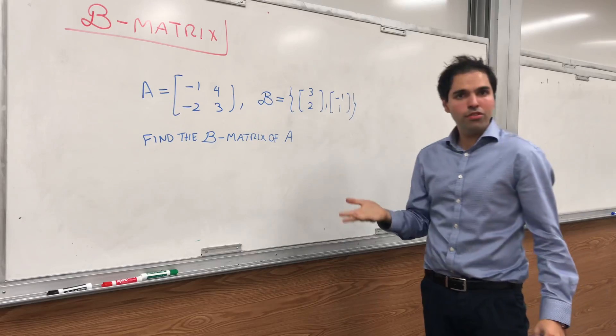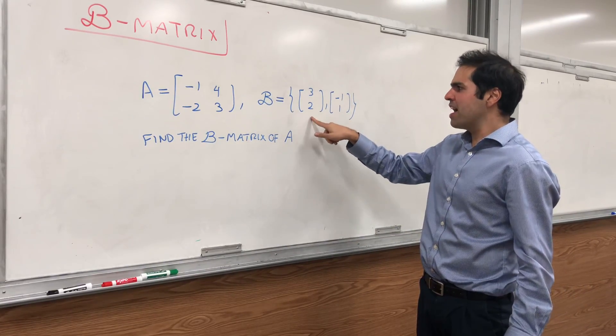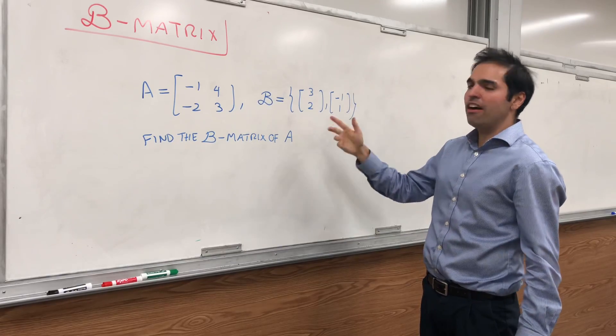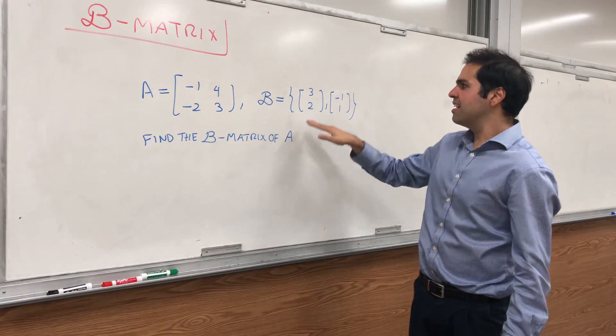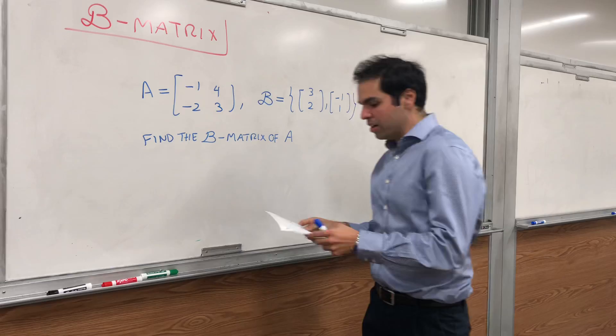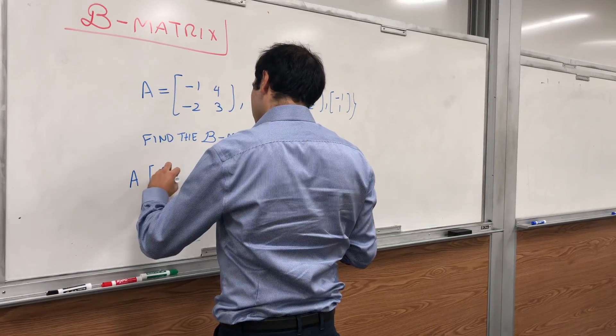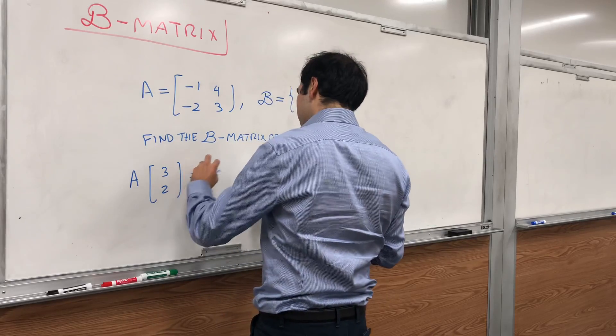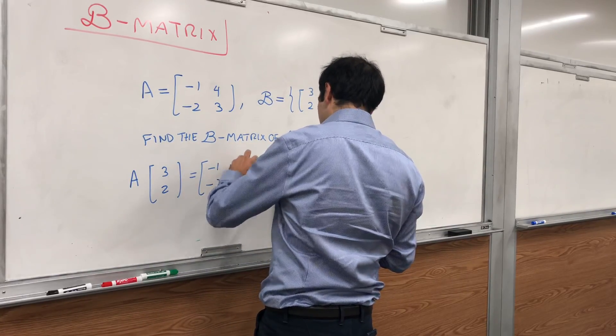Now, remember how to find matrices of linear transformations. For every vector in the basis, you have to calculate T of that vector. So here, let's calculate A(3, 2) and A(-1, 1). So A(3, 2), well that's [-1, -2; 4, 3] times (3, 2).